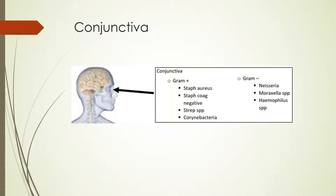Next up is the conjunctiva, where we're not going to find as big a bacterial colonization as we do on the skin. That's mostly because the lysozymes in tears help prevent the growth of too much bacteria in this area. Most commonly we're going to find gram-positives — Staph aureus, coagulase-negative Staph, some Strep species, and some Corynebacterium. Gram-negatives are also present: Neisseria, Moraxella, and Haemophilus species. The majority of what we're going to cover empirically is against Strep and Staph.